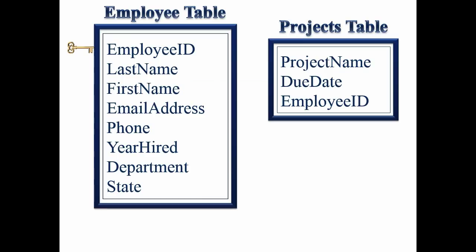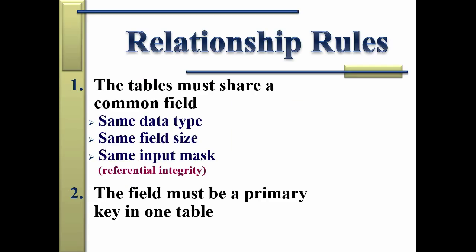Here's a quick example. In the employee table, the employee ID field is the primary key. I want to relate the employee table to the projects table. In order to build that relationship, the employee ID field has to exist in both tables with the same field size, same data type, and same input mask. Once that's set up, I can establish the primary key and create the relationship — it's a physical line drawn from one table to the next. Ensure that you're following these rules and your relationships will be built properly.